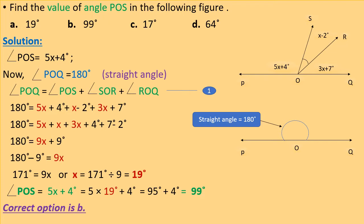Angle POS equals 5x plus 4 degrees. Angle POQ is 180 degrees as it is a straight angle. So angle POQ equals angle POS plus angle SOR plus angle ROQ — this is equation 1. Angle POS is 5x + 4°, angle SOR is x − 2°, and angle ROQ is 3x + 7°.